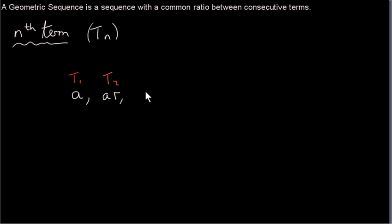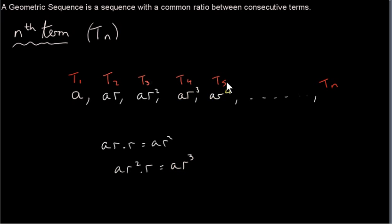How do we get the next term, T3? Well, we just multiply R by the second term, R times AR. Or AR times R. Well, that's just AR squared. And then we look for a pattern. How do we get T4, the fourth term? Well, we multiply R by T3. So we have AR squared by R. When we multiply R squared by R, we just add the powers. So we get AR to the power of 3. Similarly, we can get T5. It's R times AR cubed, which is AR to the power of 4.